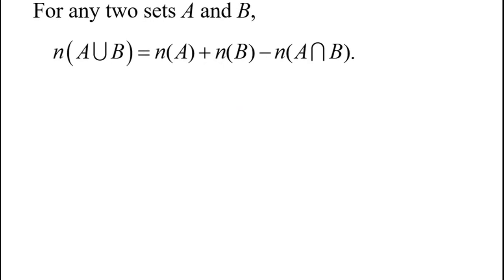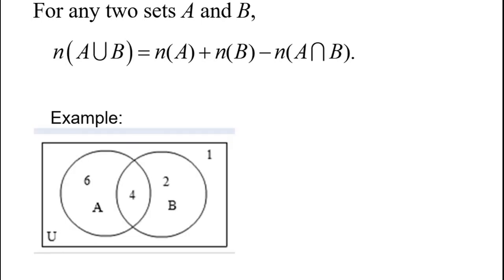That Venn diagram can be used to demonstrate what's known as the cardinal number formula, which says that the number of elements, or cardinality, of A union B is the number of elements in A plus the number in B minus any overlap, because we've overcounted it. We've counted it twice. So looking back at that Venn diagram, let's observe that this equation does hold in this particular example. The number in A union B we've already said is 6 plus 4 plus 2, which is 12. That's the left side of the cardinal number formula.